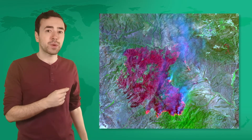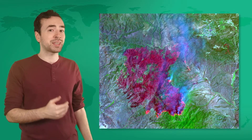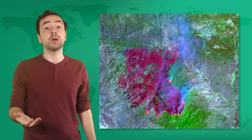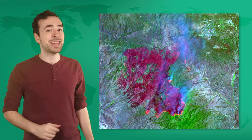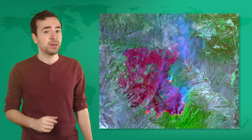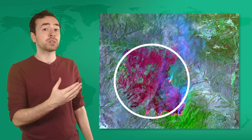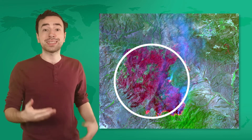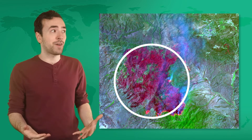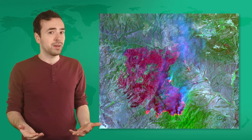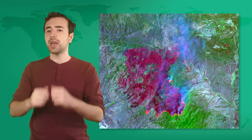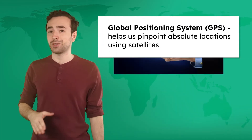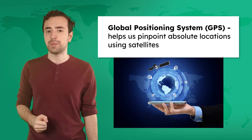This image, for example, was generated by remote sensing data, which helped geographers observe a wildfire in Arizona. The purple area shows where remote sensors detected heat, helping geographers see the size of the wildfire from above. Next, we have a tool that I bet you've heard of — GPS, or Global Positioning System.